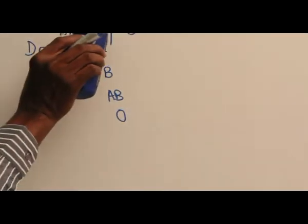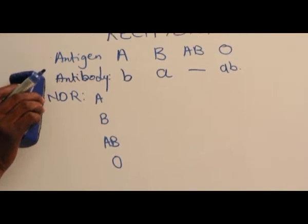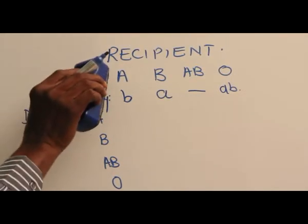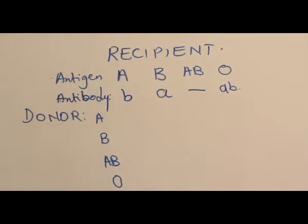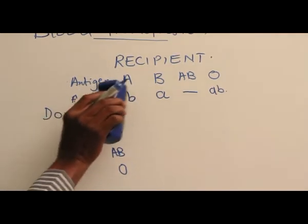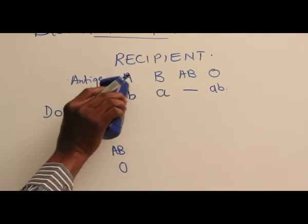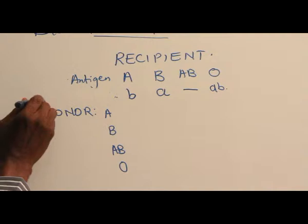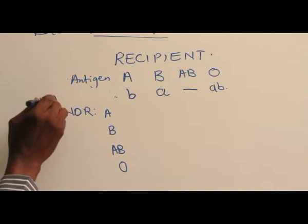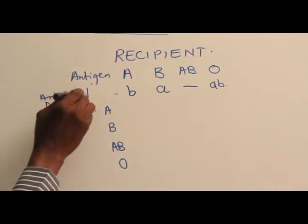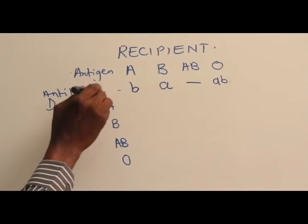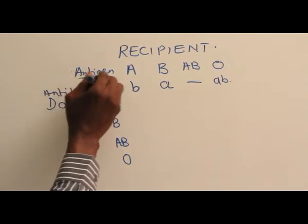For clarity, I can move this antibody backward so that we know we are talking of antigen here. So we can now draw a table successfully.